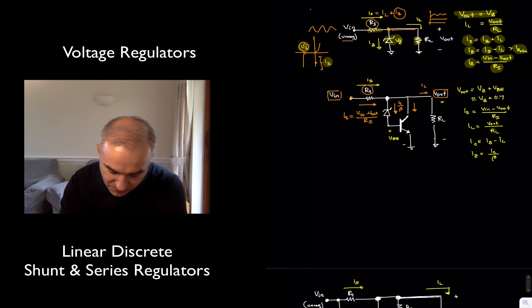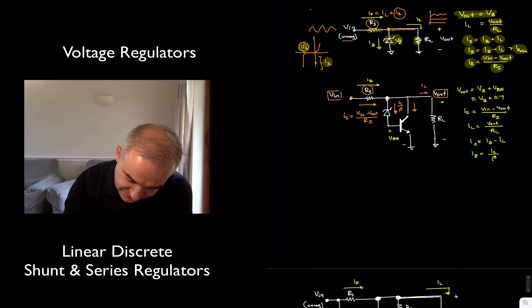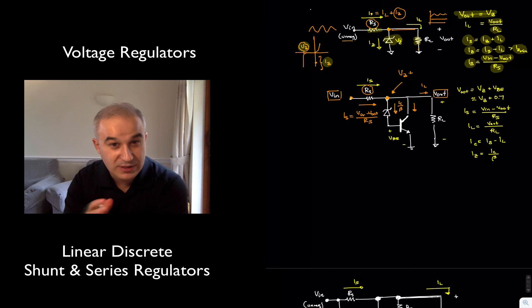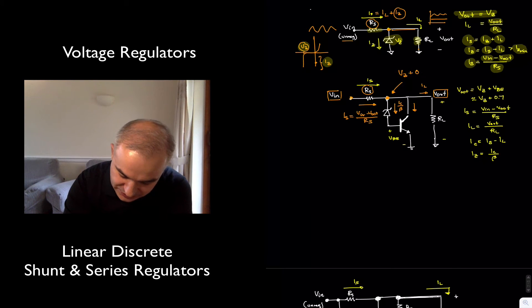Now, what's going to be the output voltage? The output voltage, if this is a ZENER with enough current in reverse breakdown, it's going to be the ZENER voltage, plus the voltage drop, the voltage between the base and emitter, which is approximately 0.7.